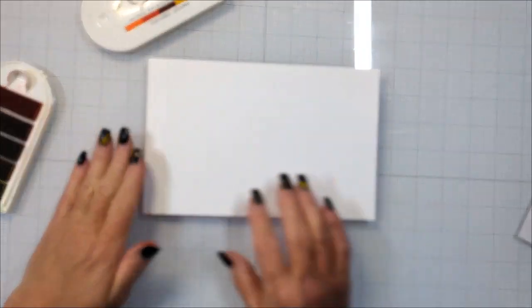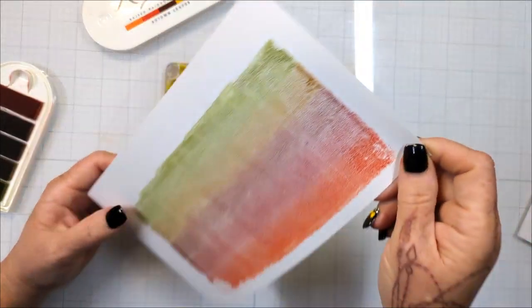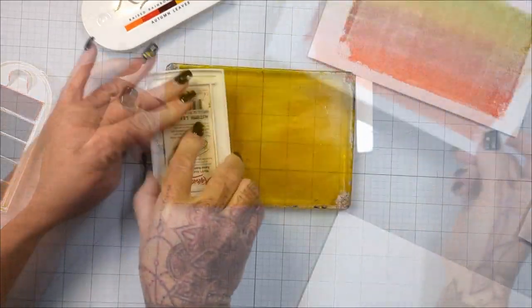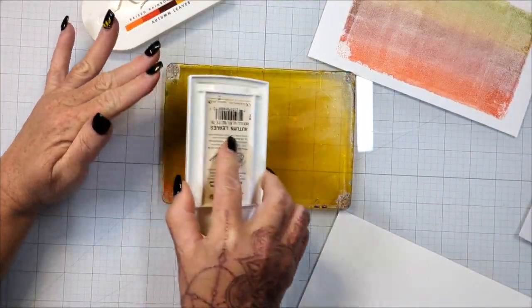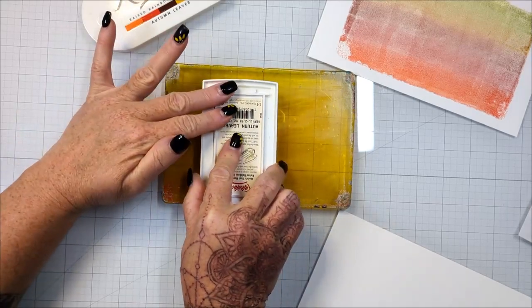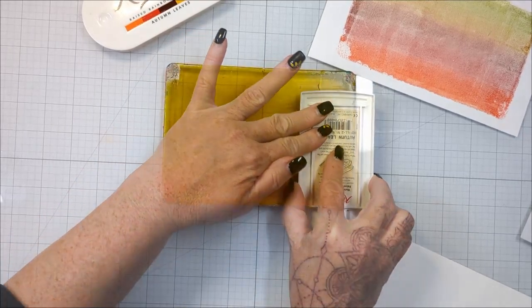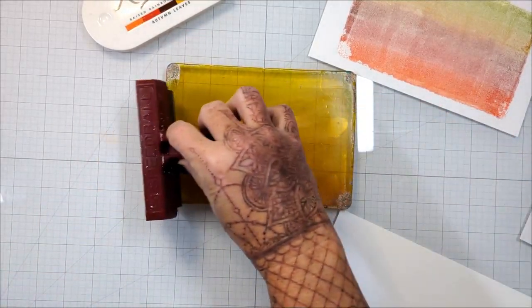Now again, I'm using the autumn leaves. I also have the spectrum. There are pretty much any color combo that you can think of, but if there's a color combo that is not available, you can make your own. There are uninked Kaleidacolor ink pads, and you can create your own color palette using re-inkers. It's absolutely amazing.